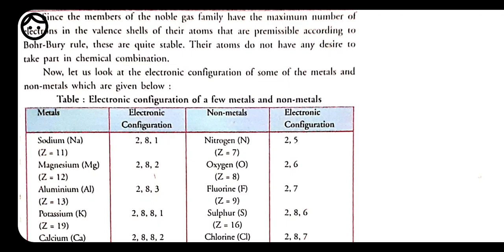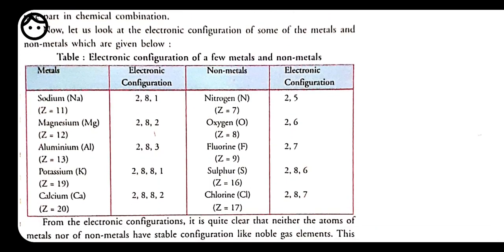Sodium is a metal with atomic number 11 (Z = 11, symbol Na), and electronic configuration 2, 8, 1. Magnesium has atomic number 12, configuration 2, 8, 2. Aluminium is 2, 8, 3. Potassium is 2, 8, 8, 1 and calcium is 2, 8, 8, 2. To attain noble gas configuration, the outer shell should have 8 electrons. It would be very difficult for sodium to gain 7 electrons, so sodium instead tries to lose its one electron.